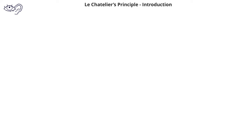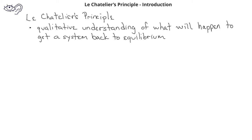In previous videos, we looked at equilibrium from a quantitative perspective, looking at the equilibrium concentrations and the equilibrium constant. We've also looked at the value of the equilibrium constant to tell us something about whether the reactants or the products are favored at equilibrium. In this video, we're going to introduce one of the most important principles in chemistry, especially related to equilibrium — Le Chatelier's principle. We'll use Le Chatelier's principle to help us understand in a qualitative way what happens when a system is no longer at equilibrium.